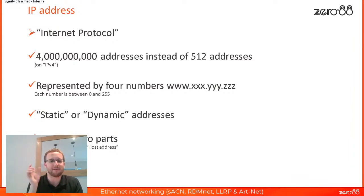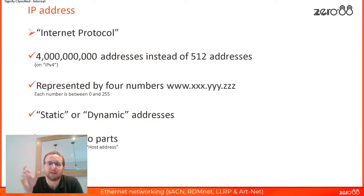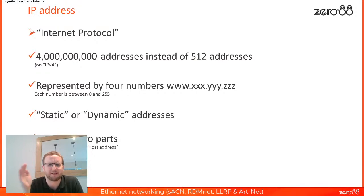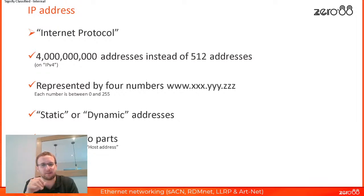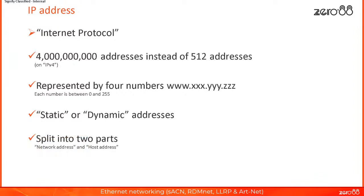An IP address is represented by four numbers — 192.168.5.10, those sorts of numbers. There are four separate numbers where each number can be anywhere between 0 and 255. You get static IP addresses — ones that you have set yourself, going into the device and saying, this is your IP address. You also get dynamic IP addresses, which we'll talk about a little bit later. And importantly, the IP address is split into two parts — the network address and the host address.